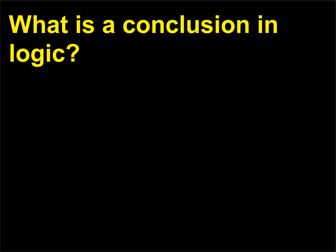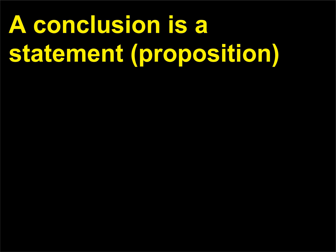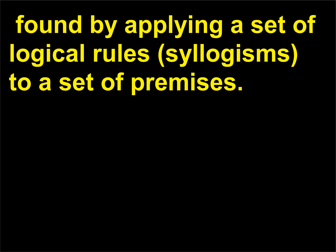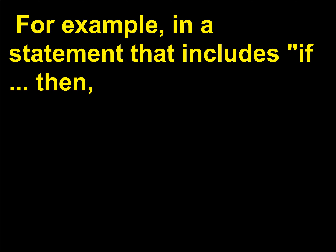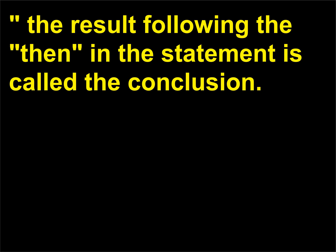What is a conclusion in logic? A conclusion is a statement, or proposition, found by applying a set of logical rules — syllogisms — to a set of premises. In addition, the final statement of a proof is called the proof's conclusion. For example, in a statement that includes if-then, the result following the 'then' in the statement is called the conclusion.